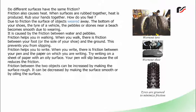Friction also causes heat. When surfaces are rubbed together, heat is produced. Rub your hands together — you can feel the warmth. Due to friction, the surface of objects wears away. The bottom of your shoes, the tires of a vehicle, and pebbles or stones near a beach become smooth due to wearing, caused by friction. Friction helps you in walking — there is friction between your foot or the sole of your shoe and the ground, which prevents you from slipping. Friction helps you to write — there is friction between your pen and the paper. Friction between two objects can be increased by making the surface rough, and decreased by making the surface smooth or by oiling the surface.